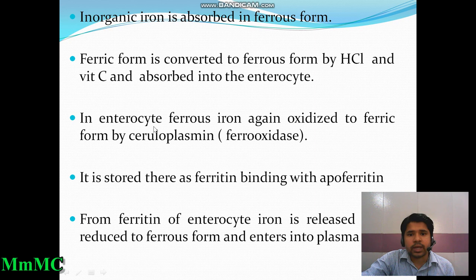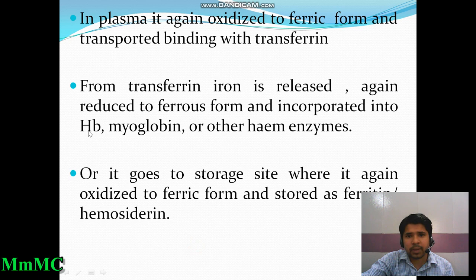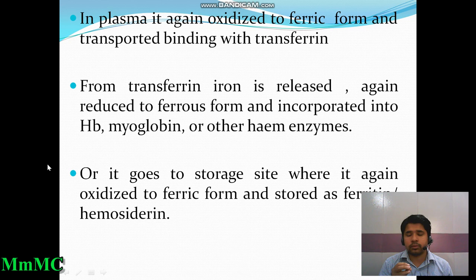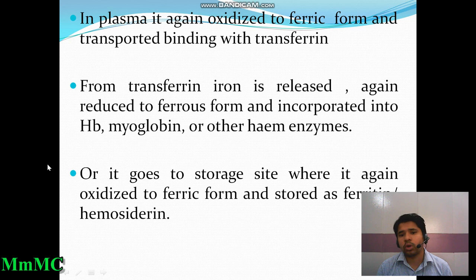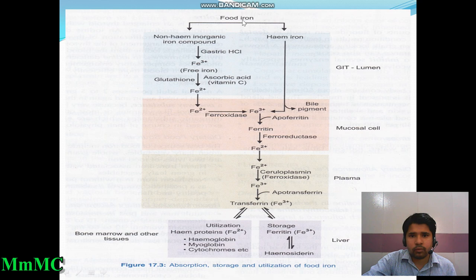Once ferrous iron enters the enterocyte, it is oxidized to ferric form by ceruloplasmin and can be stored as ferritin by binding with apoferritin. From ferritin, iron is released, reduced back to ferrous form, and enters the plasma, where it is again oxidized to ferric form and transported bound to transferrin. From transferrin, iron is released, reduced to ferrous form, and incorporated into hemoglobin, myoglobin, or other heme enzymes, or stored as ferritin or hemosiderin.